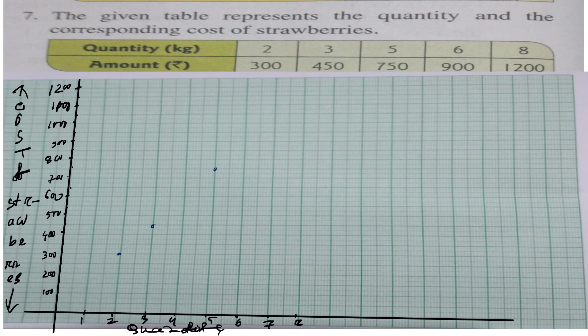And opposite to 8 kg, the cost is rupees 1200. So the cost of 8 kg is rupees 1200. Put 1200 opposite to 8 — 1200 is this point right here.